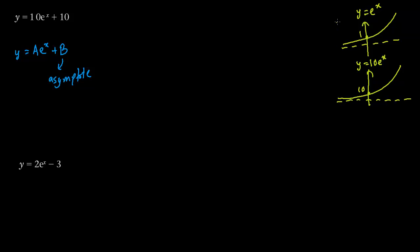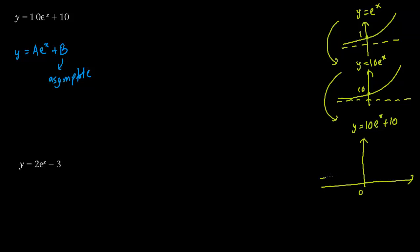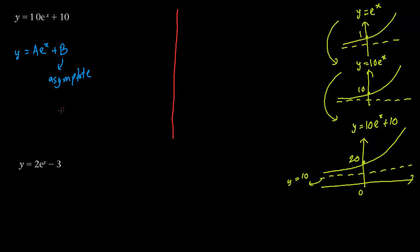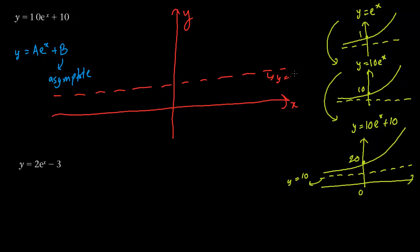Step by step: from y equals e to the power x we get y equals 10e to the power x, and from there we get y equals 10e to the power x plus 10. The asymptote is now raised by 10 — previously it was 0, now it is y equals 10. That is the asymptote. The picture is raised by 10, so previously the curve passed through 10, now it is going to pass through 20. The final sketch has the asymptote at y equals 10 and the curve passing through the point 20.